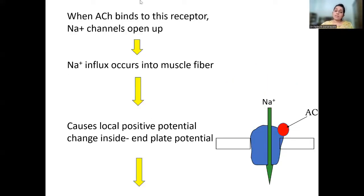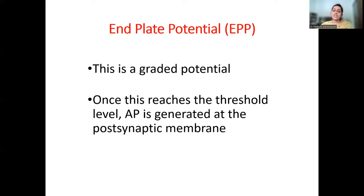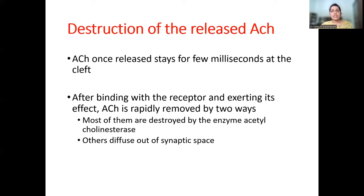When acetylcholine binds to its receptor on the post-synaptic membrane, acetylcholine-gated sodium channels open, causing sodium influx into the muscle fiber. This creates a local positive potential change inside known as the end plate potential. This then creates an action potential that spreads along the muscle membrane, causing muscle contraction. The end plate potential is a graded potential; once it reaches threshold level, an action potential is generated at the post-synaptic membrane.